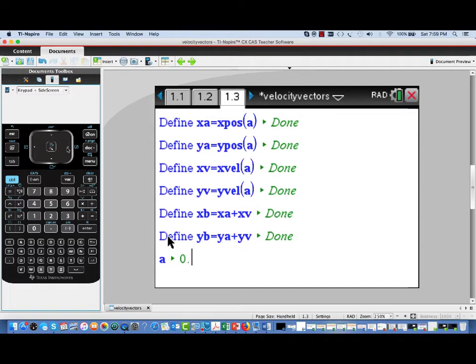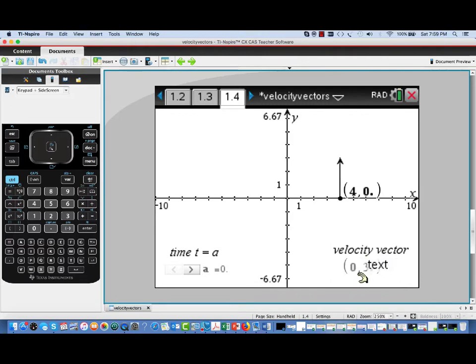Now on this next page, I've just gone through and defined, for a particular time t equal to a, the current position Xa, Ya for a particle, its current velocity. And by adding the velocity components to the position components, we can create XB, YB, which will be the head of a vector with a tail at the current position. It's a way of drawing the velocity vector as we move around a curve. And I've set a equal to 0 to start with, which will be our starting time.